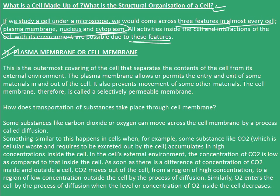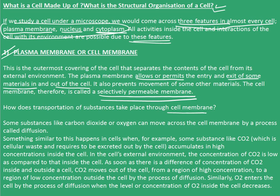The first one is the plasma membrane, or the cell membrane. The plasma membrane is the outermost covering of the cell that separates the contents of the cell from its external environment. It allows the entry and exit of some materials in and out of the cell while preventing movement of some other materials. The cell membrane is therefore called a selectively permeable membrane. Some substances like carbon dioxide or oxygen can move across the cell membrane by a process known as diffusion.